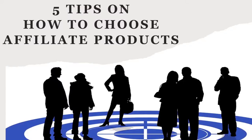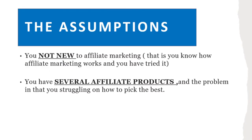Today we're talking about five tips on how to choose an affiliate product — in other words, how do you decide what to promote in affiliate marketing? If you have five products, how do you narrow down to one or two? What tips or strategies can you use to decide on what to promote?